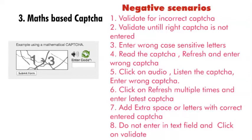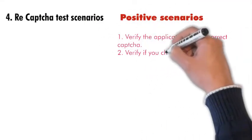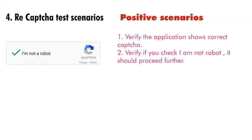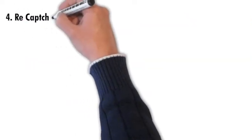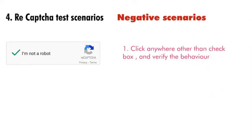Do not enter anything in the text field and click on validate — check whether you are getting any pop-up message. Now let's see reCAPTCHA scenarios. This is a very common CAPTCHA on websites. Positive scenario: verify that the application shows the correct CAPTCHA — tick on the checkbox given and check whether you get the correct response. Verify that if you check 'I am not a robot', it should process further. Negative scenario: click anywhere outside the checkbox area and verify the behavior — you should get a pop-up or not proceed further.